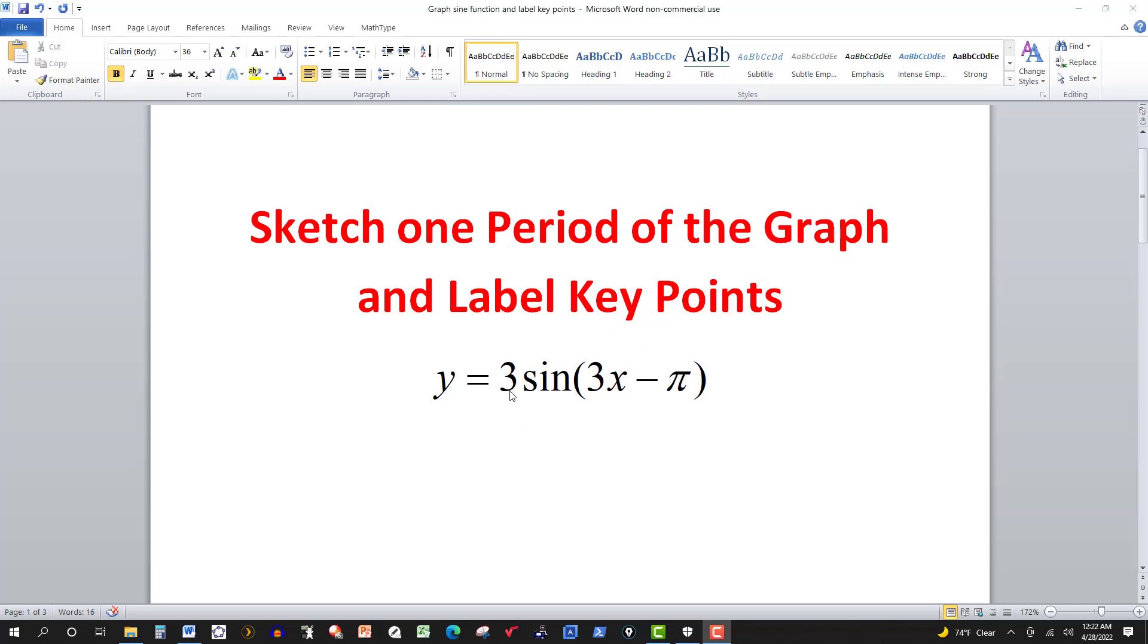Obviously the amplitude is going to affect the stretch of the graph. There's nothing added over here so we don't have a vertical transformation here, but the period is going to change. So we want to relabel those main points. Normally it would start at zero and go through 2 pi, that's one period, and then we label the main points.